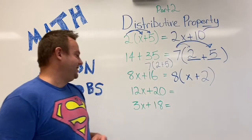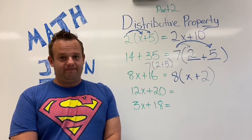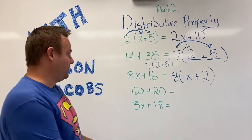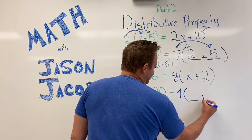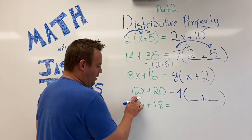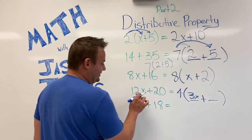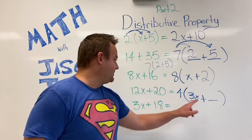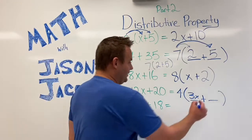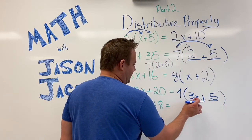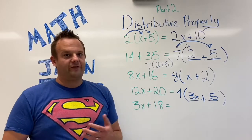12x and 20. 12x plus 20. What's the greatest common factor of 12 and 20? If you said 4, you're correct. So 4 factors out. Now 4 times what equals 12x? That's right. 3x. 4 times 3x is 12x. Plus, and then 4 times what is 20? 5. So 4 times the quantity 3x plus 5 equals 12x plus 20. They're equivalent expressions.